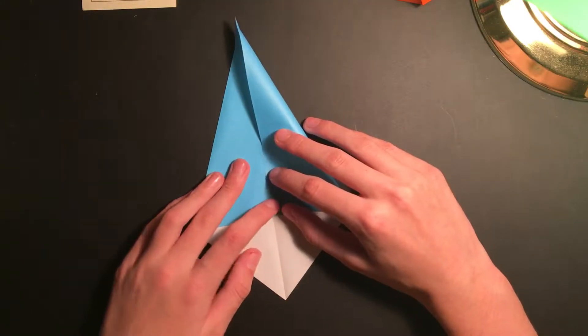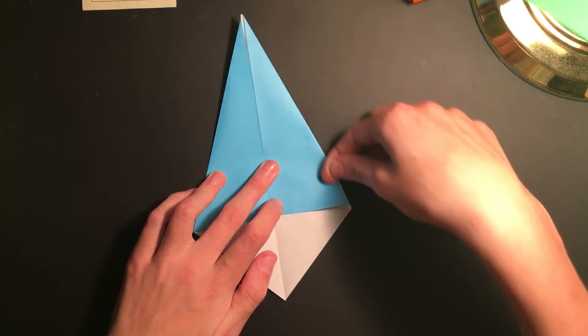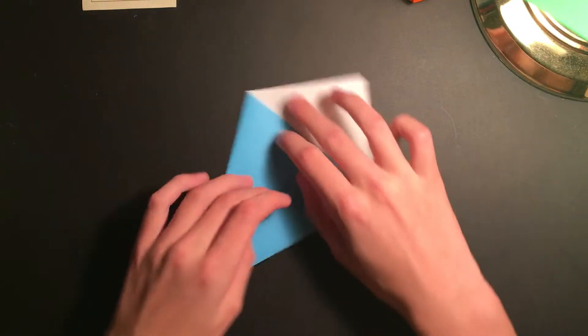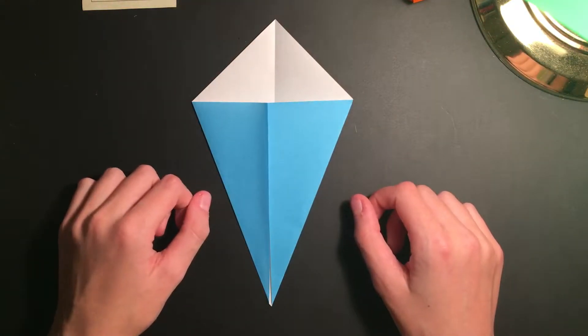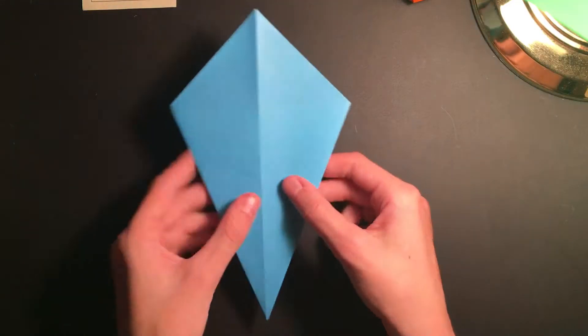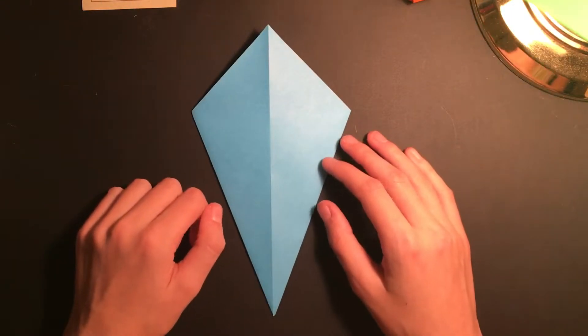So we're going to go ahead and do this on both sides. And here's our kite base. It's called a kite base because it looks like a kite, so now we're going to flip over so that just a solid color is facing upwards towards us.